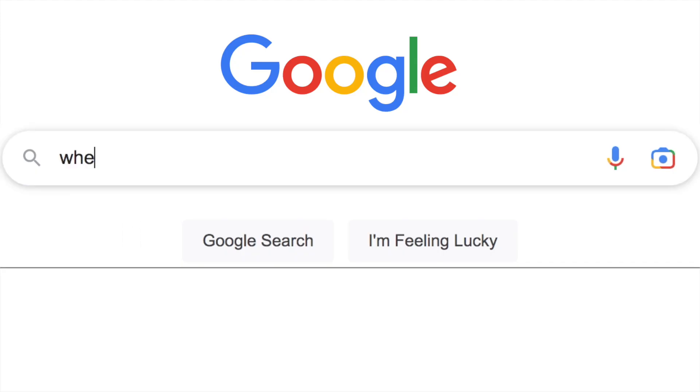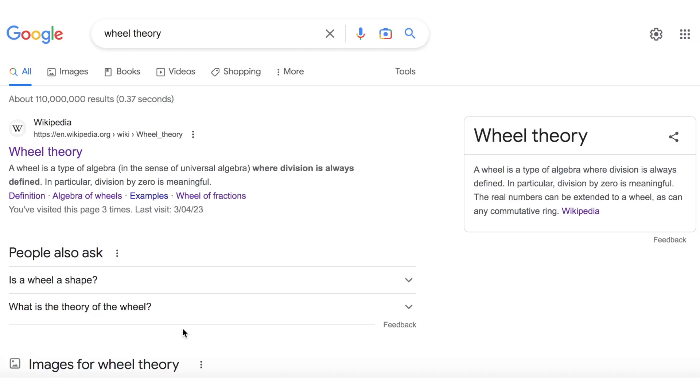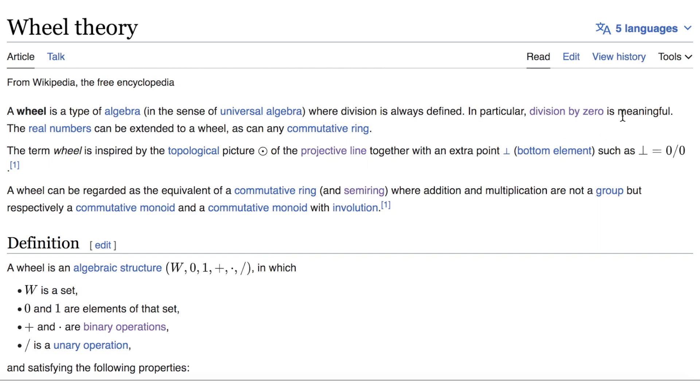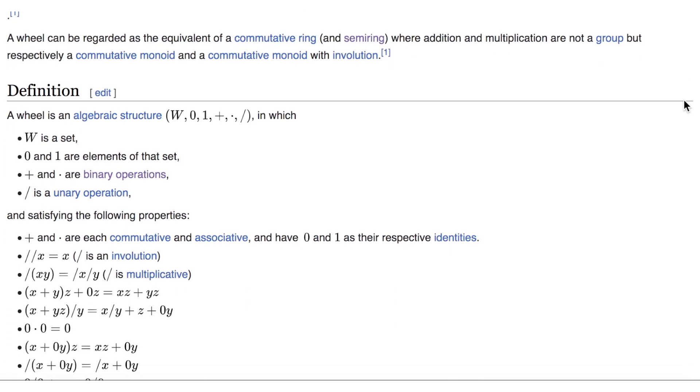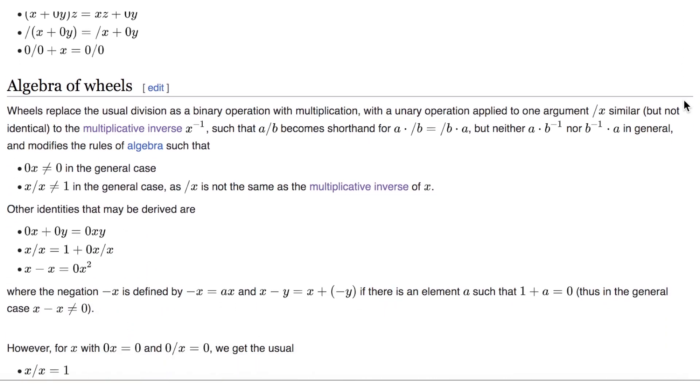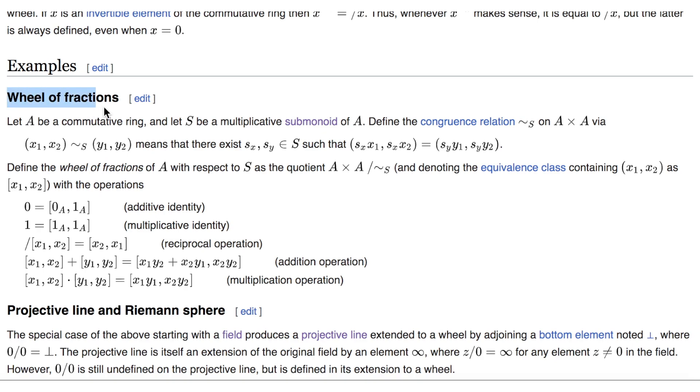And check the comments below, someone will probably correct me on something. If you look up wheel theory on Wikipedia, this is what it says. It gives a formal definition of the wheel and lists some of the basic properties that we saw in part two. And then there's this section, the wheel of fractions. Let A be a commutative ring, and let S be a submonoid of A. Okay, what the hell am I reading? This is complete gibberish. Don't worry, I'm not going to go into this technical maths speak. All that matters is this is like a formula, or an algorithm, that allows us to generate different wheel algebras.